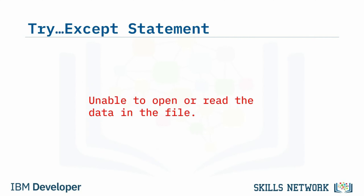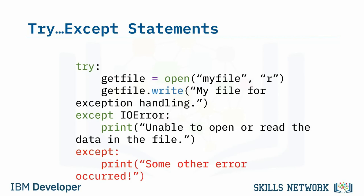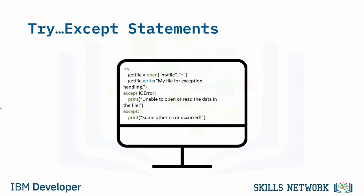For example, perhaps you are writing a program that will open and write a file. After starting the program, an error occurred as the data was not able to be read. Because of this error, the program skipped over the code lines under the try statement and went directly to the except line. Since this error fell within the IOError guidelines, it printed 'unable to open or read the data in the file' to the console. When writing simple programs, we can sometimes get away with only one except statement, but if another error occurs that is not caught by IOError, we would need to add another except statement.